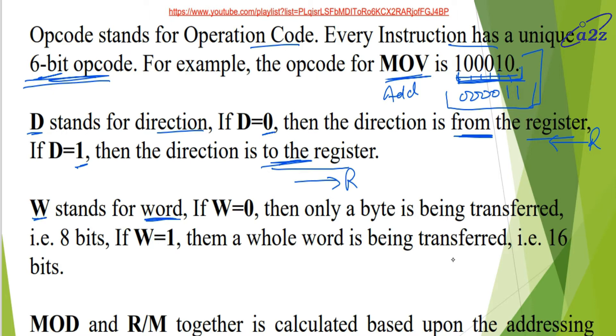Similarly, W stands for word. If W equals 0, then only a byte is being transferred. Only one byte will transfer, that means 8 bits. 8 bit operation is being performed. And if W equals 1, then whole word is being transferred, that is 16 bits. So if W value is 1, then 16 bit operation will be performed.